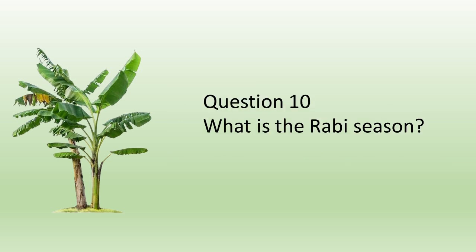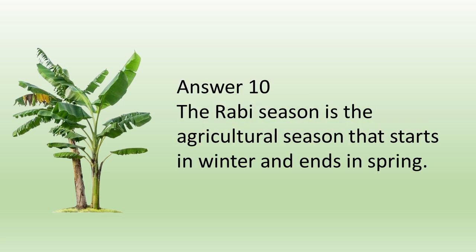Question number ten: What is the Rabi season? Answer: The Rabi season is the agricultural season that starts in winter and ends in spring.